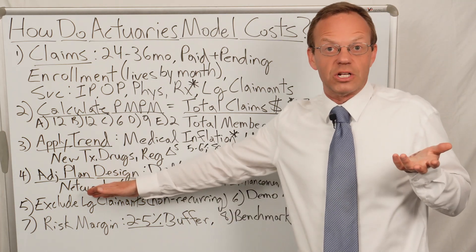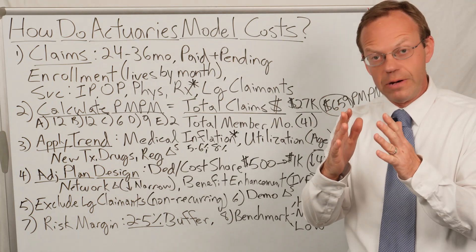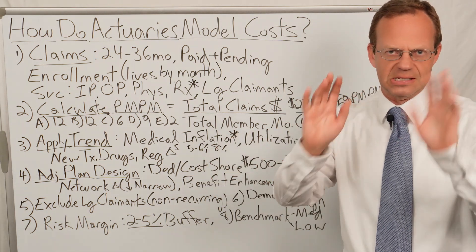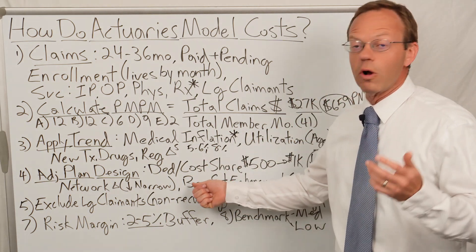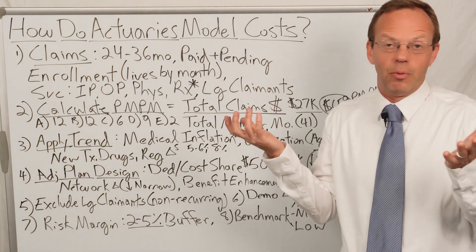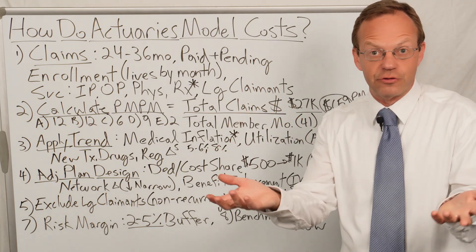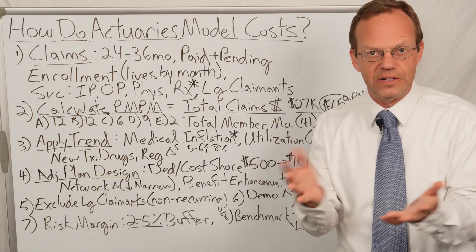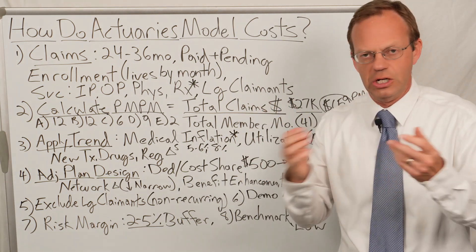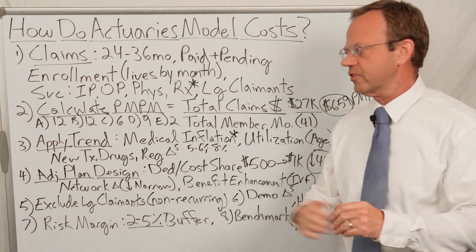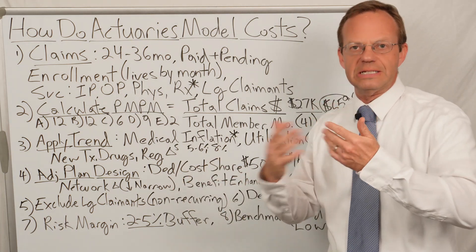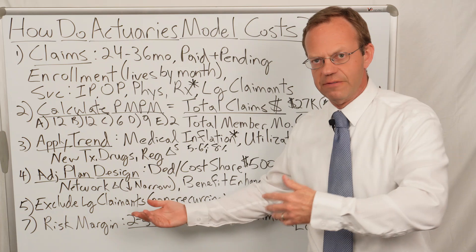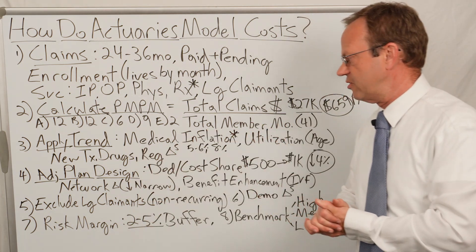Are there network changes? If you go to a more narrow network, that will lower costs as well. Or if there's a benefit enhancement — for example, some employers want to offer in vitro fertilization coverage that they didn't offer last year. If you add IVF coverage, that's going to make your healthcare costs go up. The actuaries can look at tables and say how much your claims will go up if you add a benefit like in vitro fertilization.